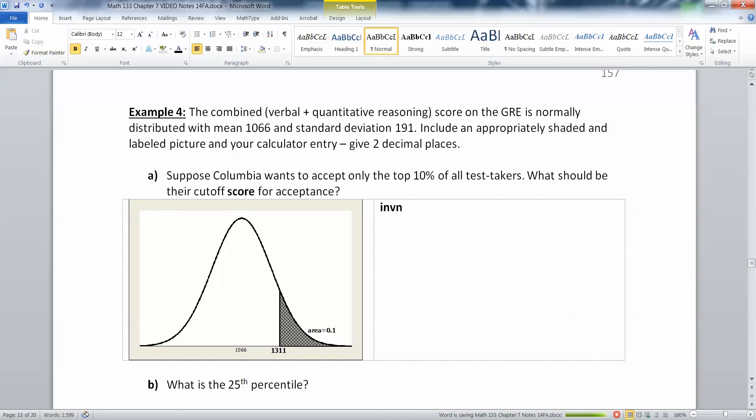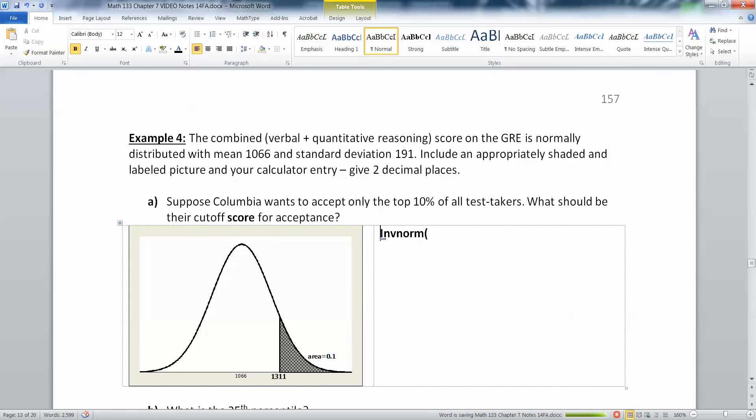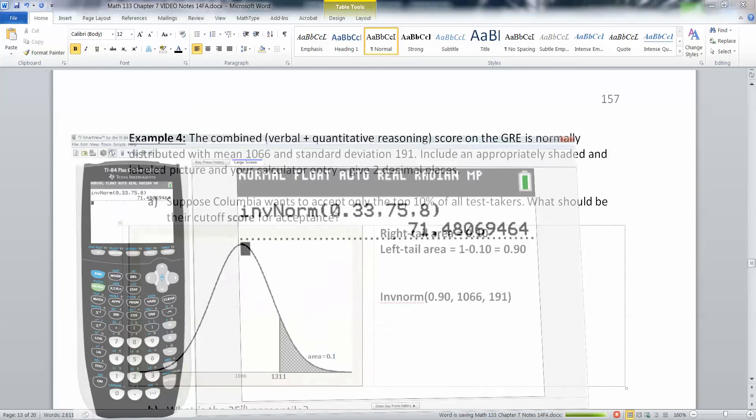So we're going to have to find inverse norm, and then we have to tell it the left tail area. Now here's where it gets a little tricky. We know that the right tail area is 0.10. Right tail area equals 0.10. This means that the left tail area of our score is 1 minus 0.10, which is 0.90. So that's what we have to put in to the calculator. 0.90, 1066 is the mean, 191 is the standard deviation. So let's find what that is.